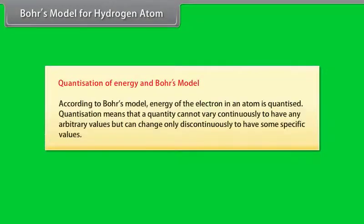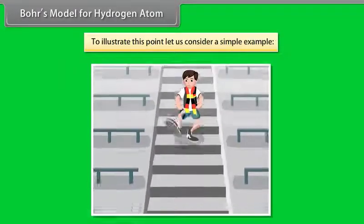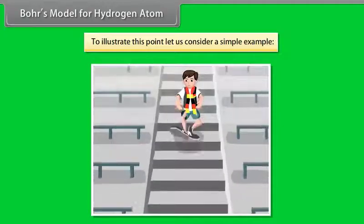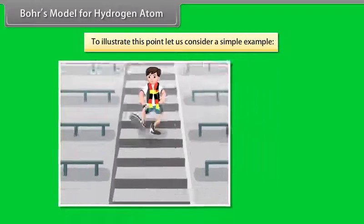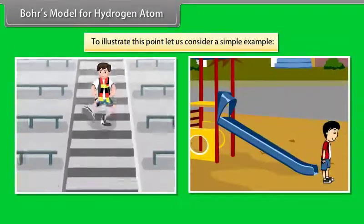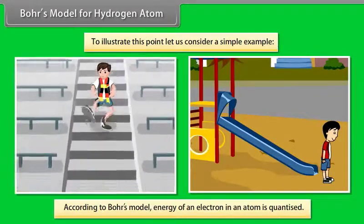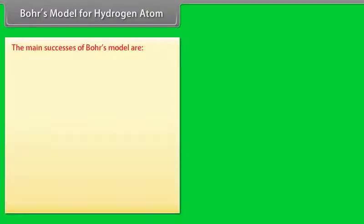Quantization of energy and Bohr's model: According to Bohr's model, the energy of an electron in an atom is quantized — meaning it cannot vary continuously but only changes discontinuously to specific values. For example, a person moving down a staircase can have only certain definite energy values (quantized), whereas moving down a ramp allows any continuous energy value (not quantized). The main successes of Bohr's model include: (1) It explains the stability of an atom.